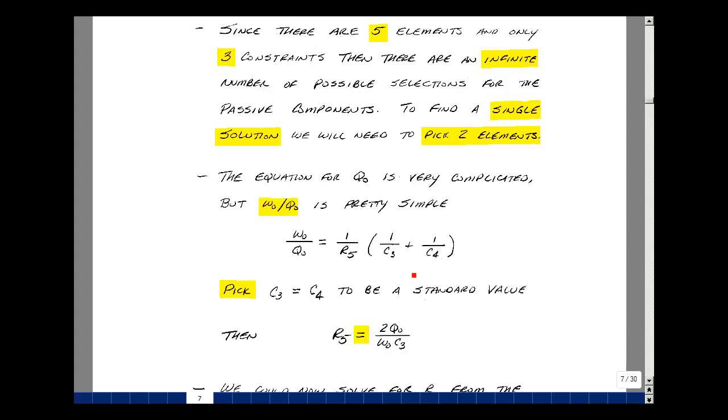Capacitors don't have as many values to select from as resistors, so why don't I pick these two capacitors to be equal to each other, to be a standard value that I have in my parts box. Then I could solve for R5, be equal to Q-naught over omega-naught, and then just let C4 equal C3, so I'd have two over C3. What I have is picking the resistor R5 depends on the filter specs of omega-naught and Q-naught, divided by my first pick. Now if it turns out that the first pick was resulting in R5 being impractical, we can go back and pick a new value for C3 and try it again.